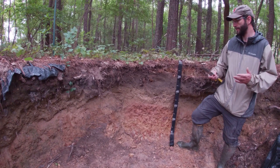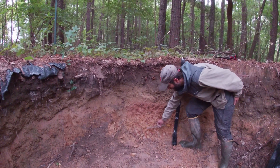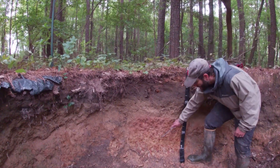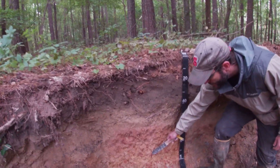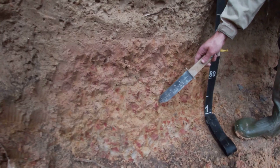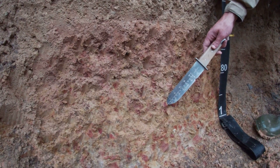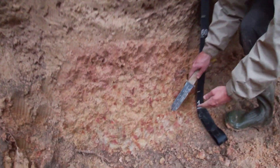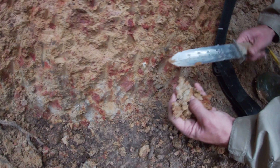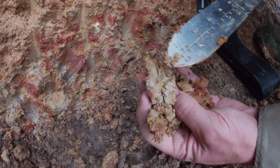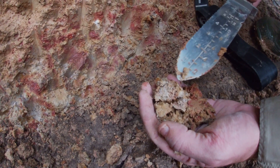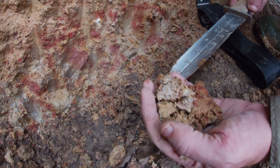Here we don't have that horizontal tiger striping, but what we do have are extreme areas of iron accumulation where you see this really red material. This again is a precursor of plinthite — this really red color. Getting down to the second BT, check out the depletions. We have really nice examples of depletions in the matrix — gray colors. So you have concentrations and depletions. Your seasonal high water table here is about 90 centimeters.